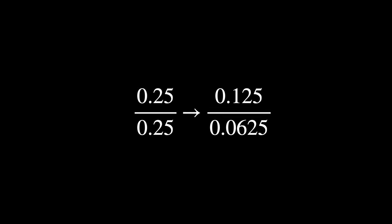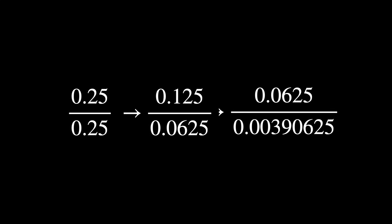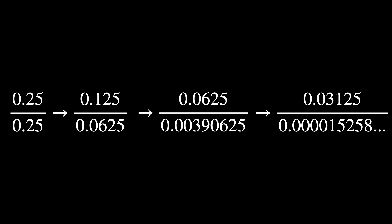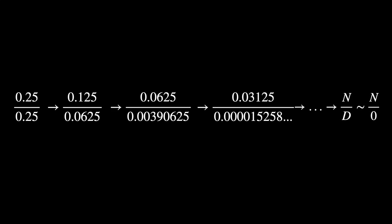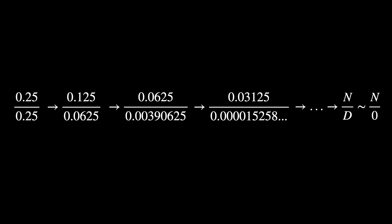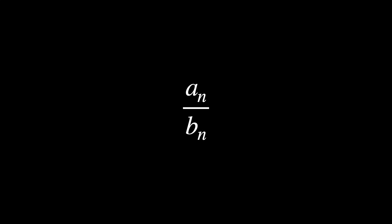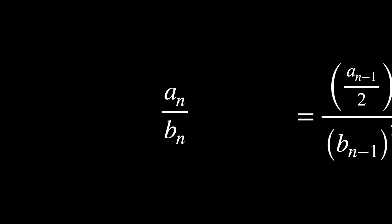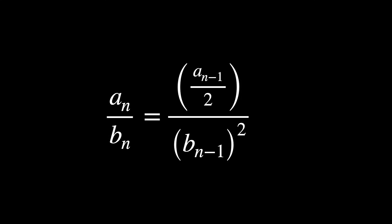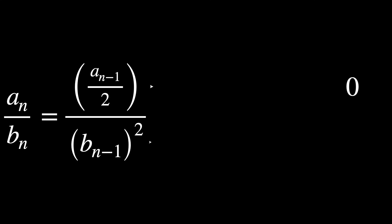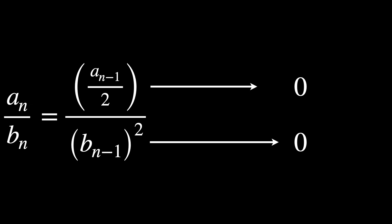This is a very important question. For example, notice the pattern in this sequence. The numerator decreases by half and the denominator is squared at each step. The general formula for the nth element would be a^n over b^n. Both the numerator and the denominator approach 0, but we can clearly see that the denominator tends to 0 faster than the numerator.